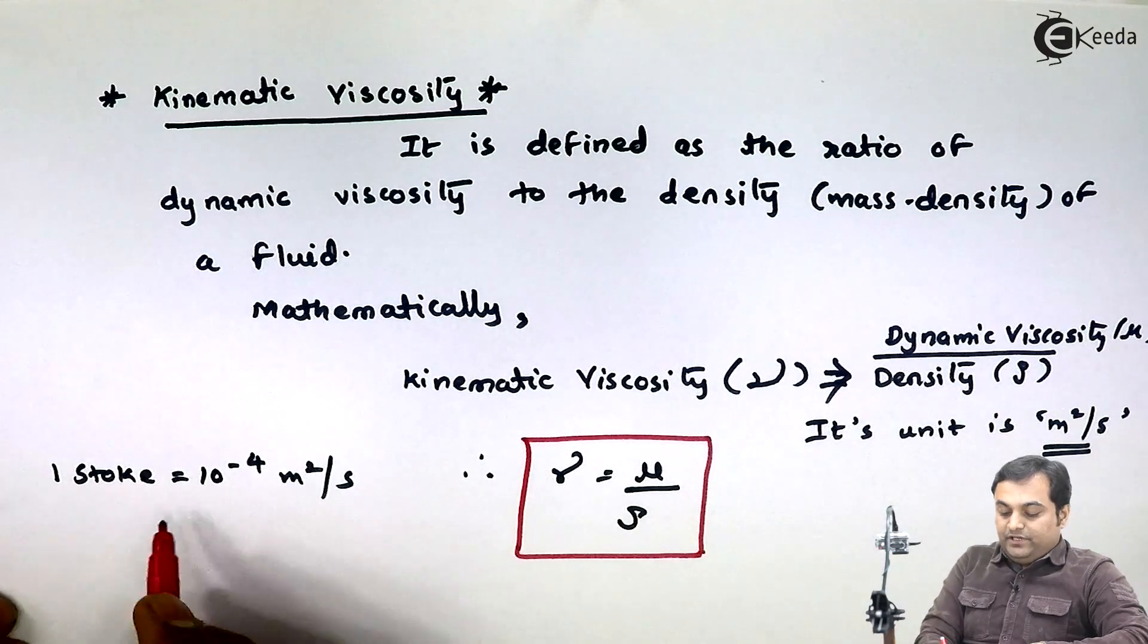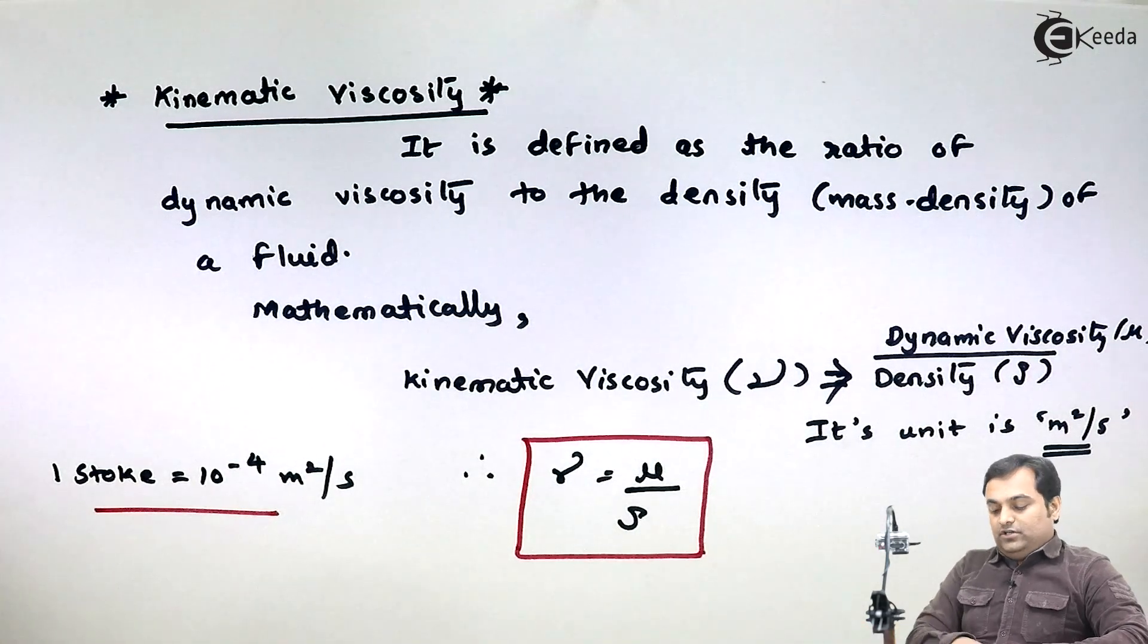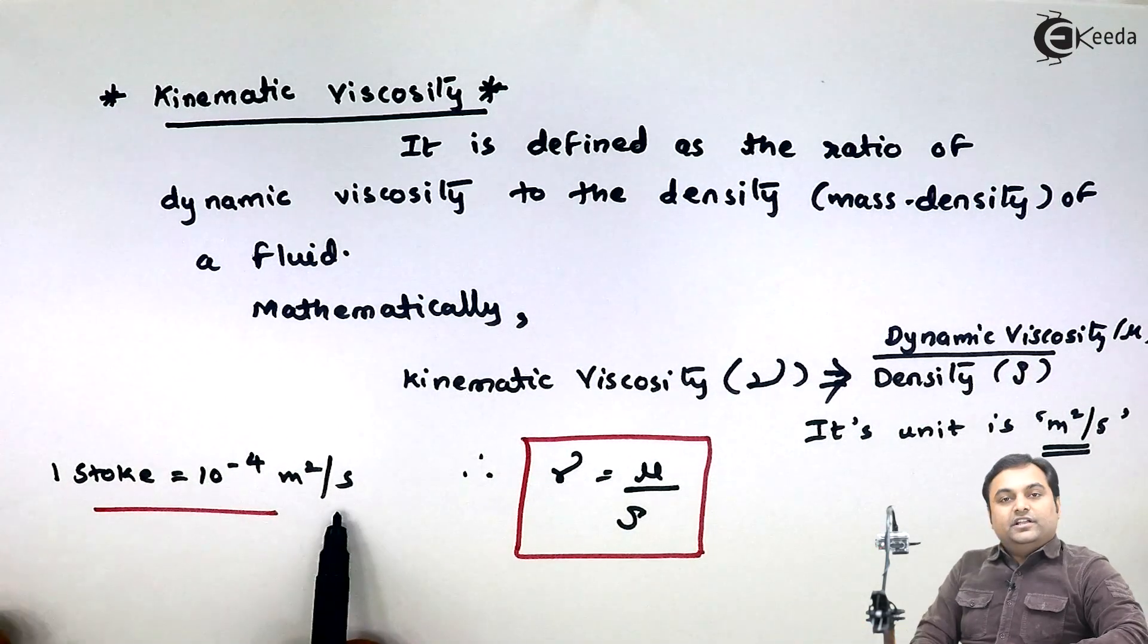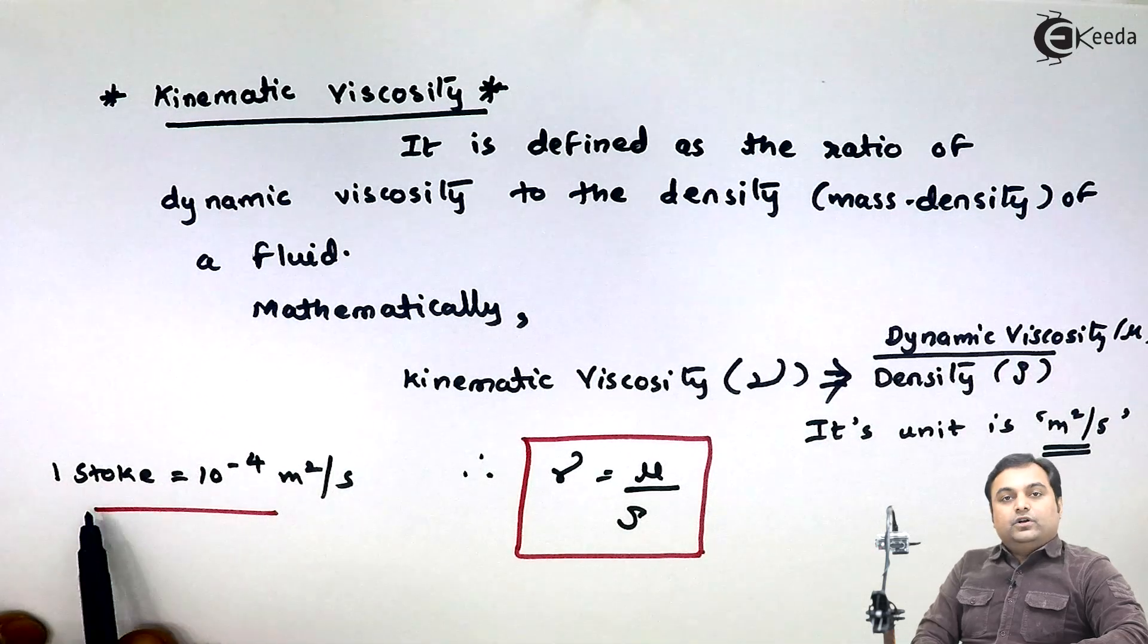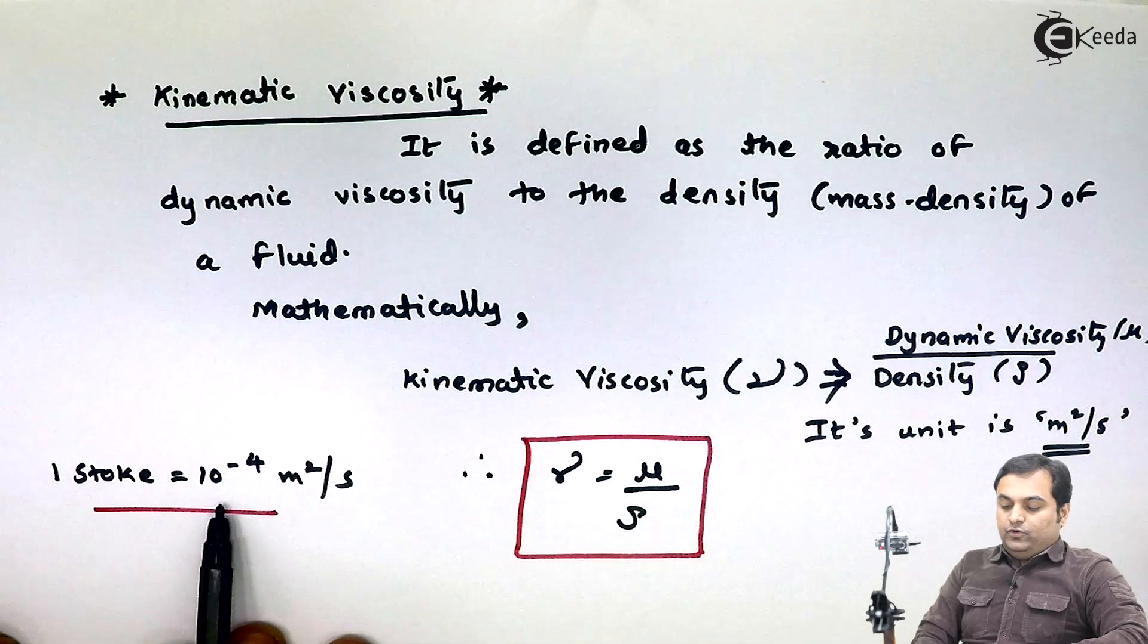So if in the question they have given kinematic viscosity in the form of stoke, we can convert it into meter squared per second. This means we have to convert stoke into meter squared per second by multiplying it by 10 raised to minus 4.